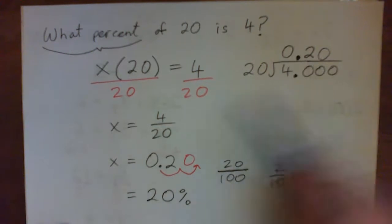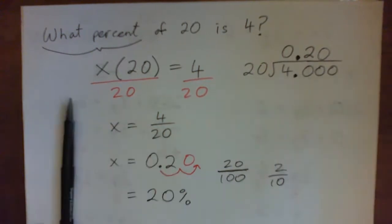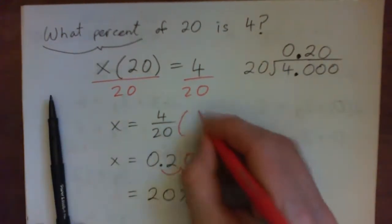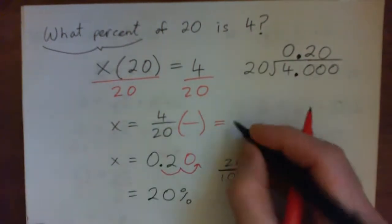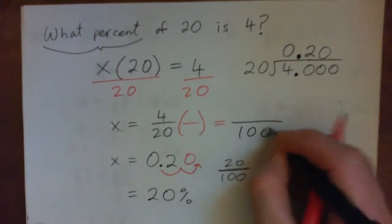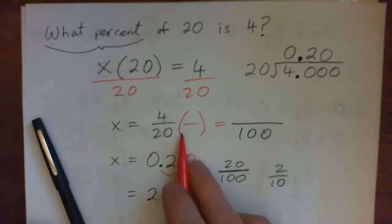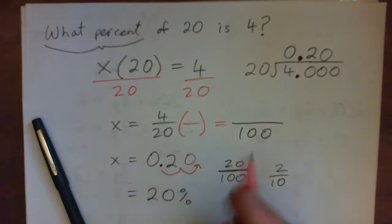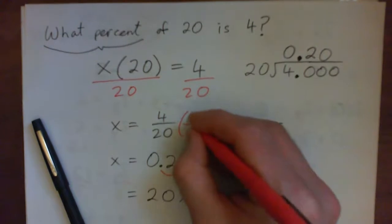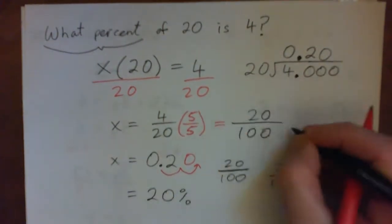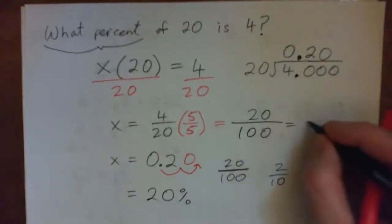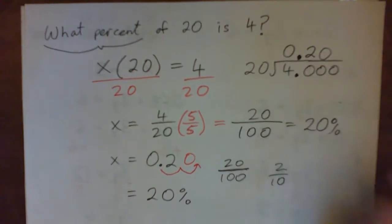So without doing the long division, another way of getting this is I could multiply this fraction by something that gives me 100 on the bottom. Because I look at 20, I know 20 is a multiple of 100. Well, 20 times what gives 100? 20 times 5 gives 100. I multiply the top also by 5. 4 times 5 is 20. So that's 20 over 100 or 20 percent. So that's just another way of doing it.